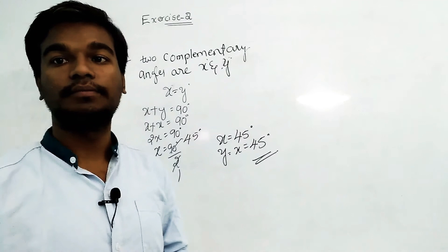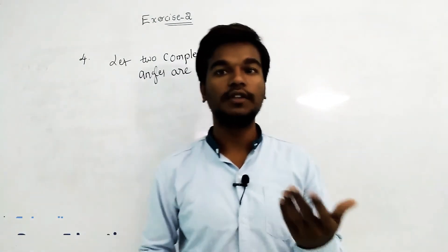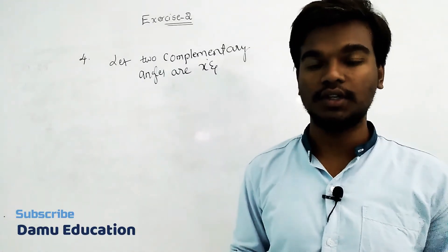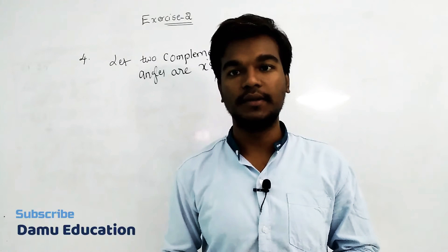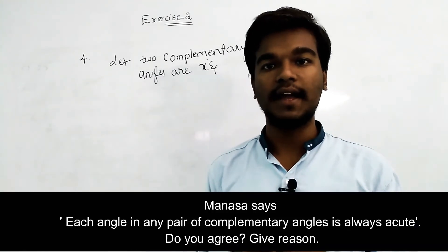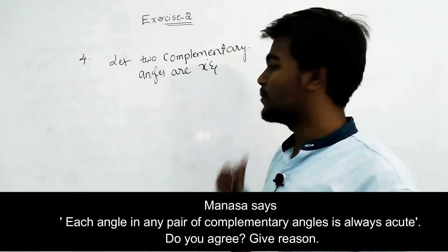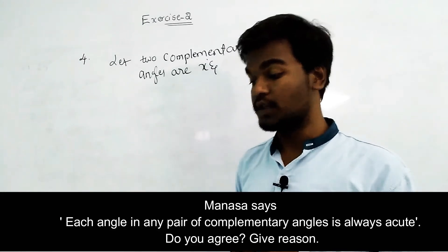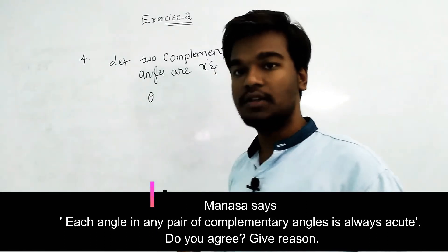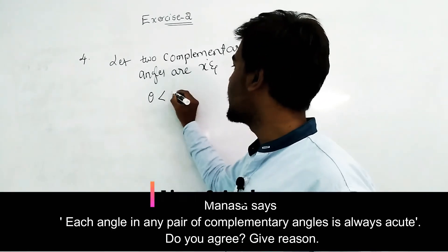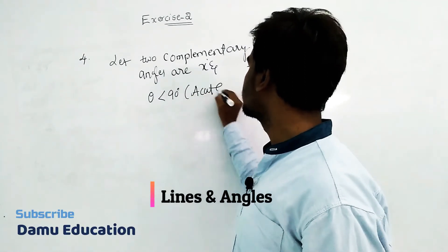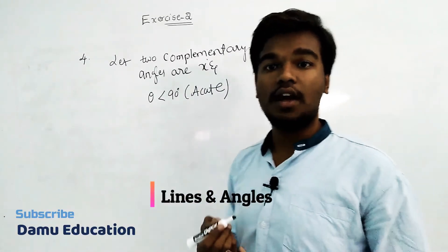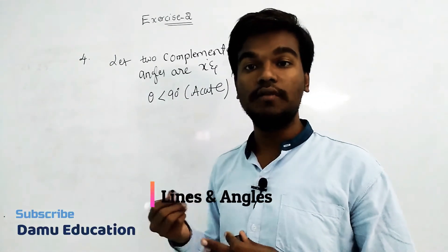In this module we are going to discuss the solution for the fourth question. The question is: Manasa says each pair of complementary angles is always acute — do you agree, and what is the reason? As discussed, two complementary angles x and y sum to 90 degrees. Manasa claims both x and y must be acute angles. An acute angle is an angle less than 90 degrees.